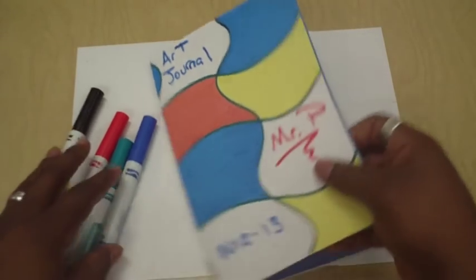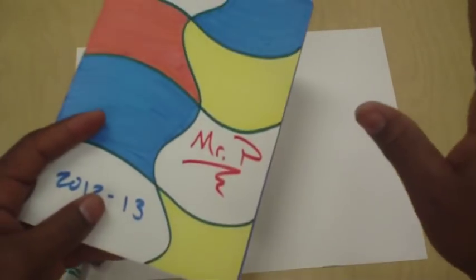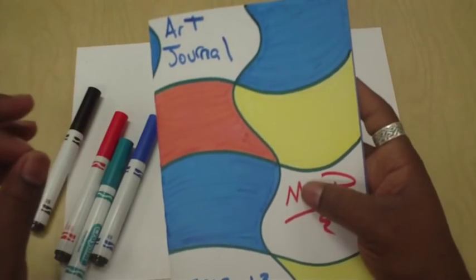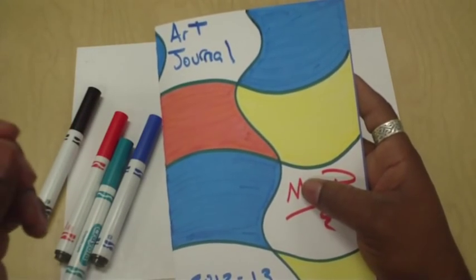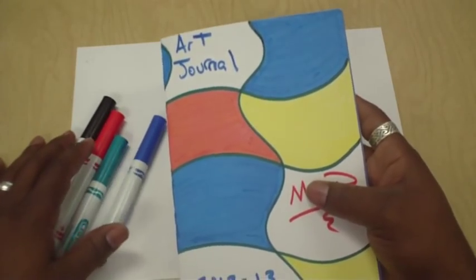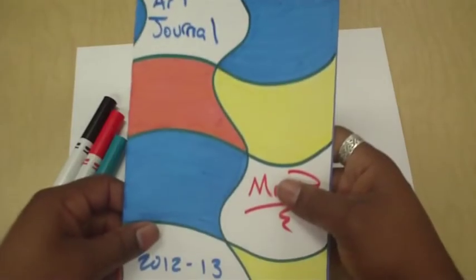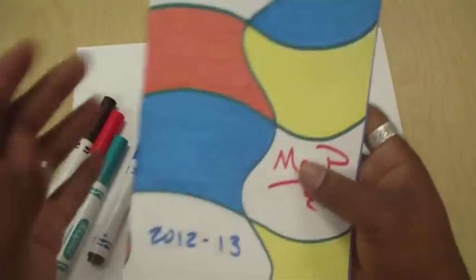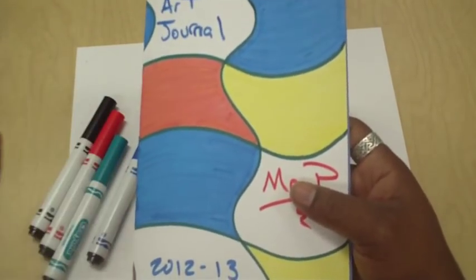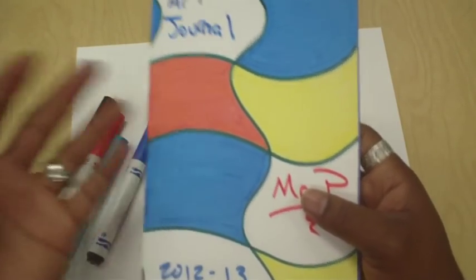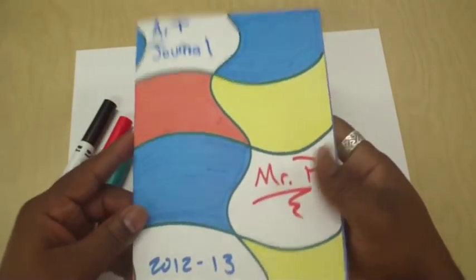Lots of times we'll do projects and then you'll love the art project and then I'll say, hey, so what were we talking about when we did that project and you'll say, I don't know, but it was fun. Well, I kind of want to get away from that. I want you to be able to have something to say, oh yeah, I remember when we did that. Be able to open this up, flip it to the right page and say, that's when we were talking about this particular artist or that particular technique. So that's what an art journal is and that's what we're going to make here.